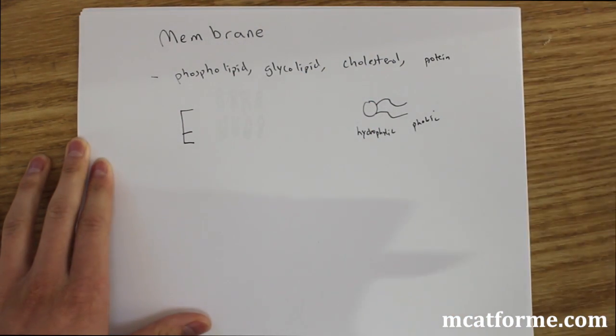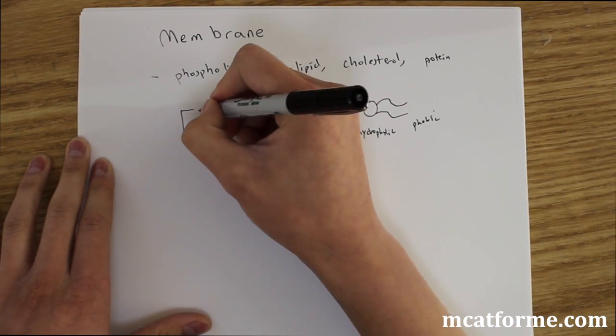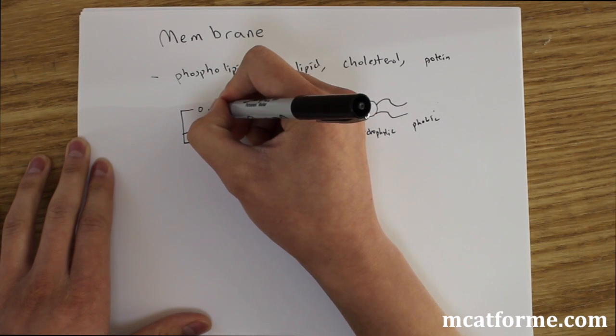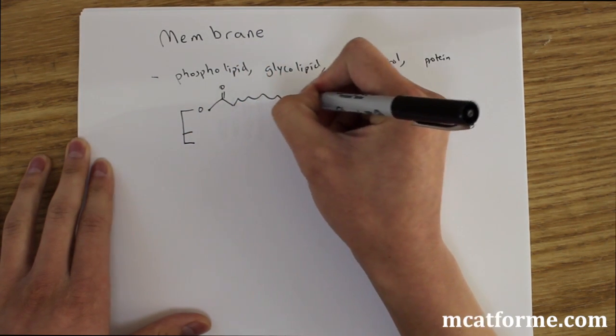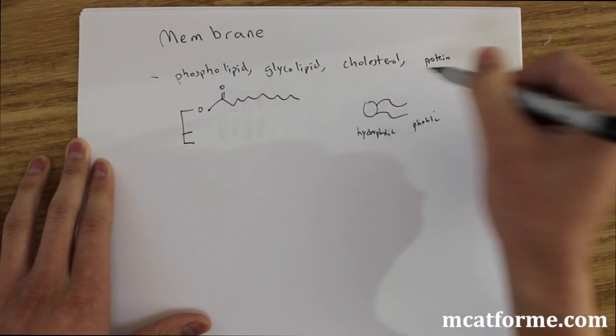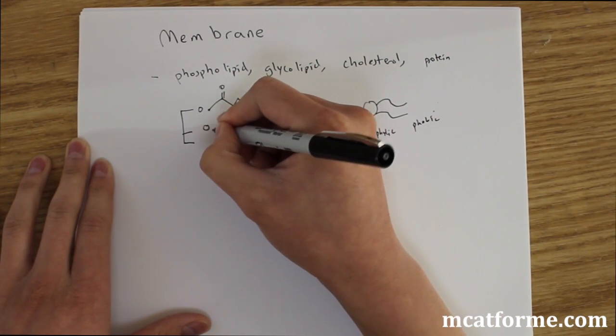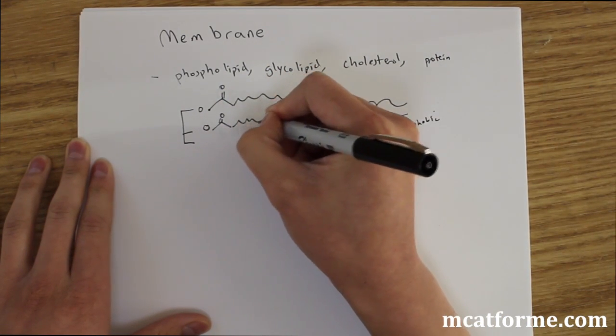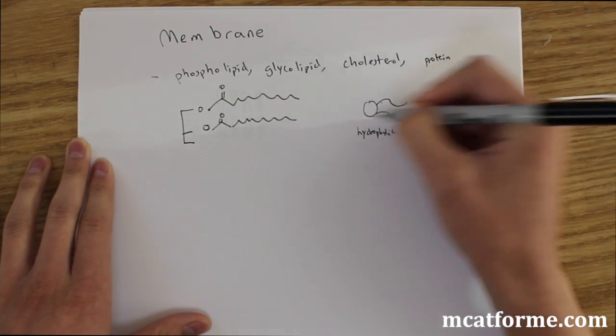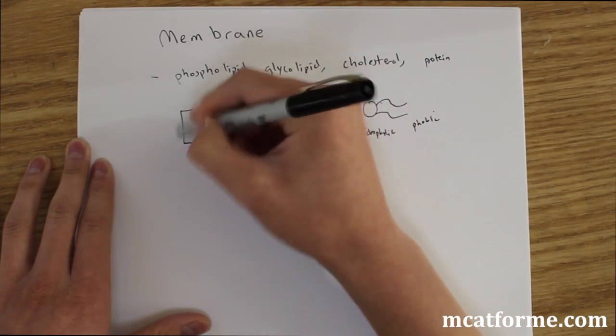And so what does that even look like? So we have this group right here. So we have our glycerol backbone and then we have these fatty acids like that. And so if you can imagine that would be the tail. And we have two of those.